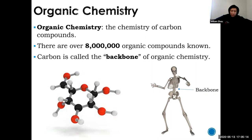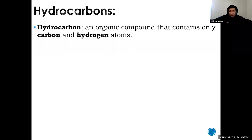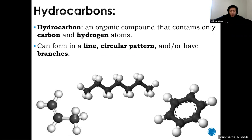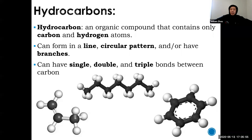When we learn about organic molecules we have to learn about hydrocarbons. A hydrocarbon, as the name suggests, is made up of carbon and hydrogen and nothing else — you don't need oxygen. Hydrocarbons can have different shapes: a straight line, branched, or in a ring. They can also have single, double, or triple bonds.